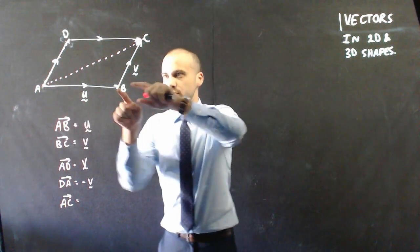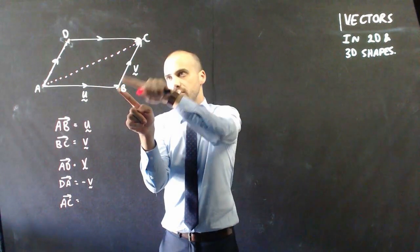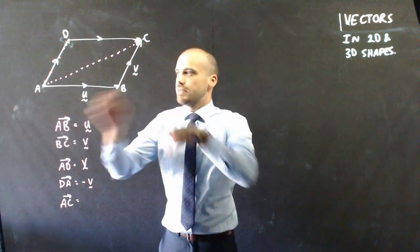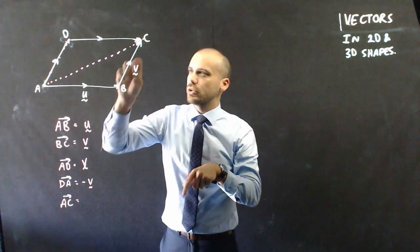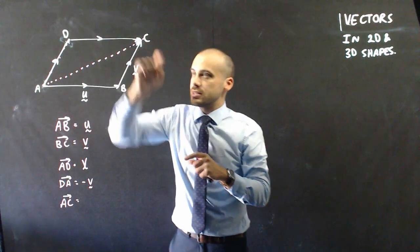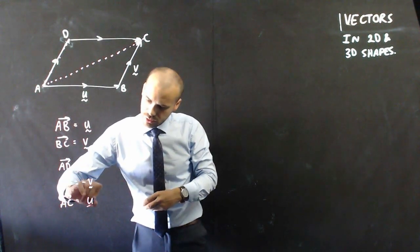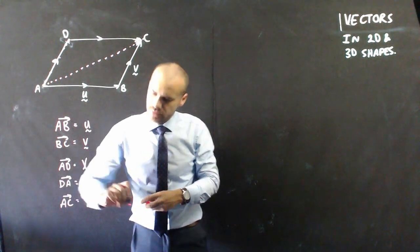And then joins the tail of V to the head of U, so it's actually U plus V. If you were to walk along U and walk along V it would be the same as walking from A to C, so we can say that the vector AC is equal to U plus V.